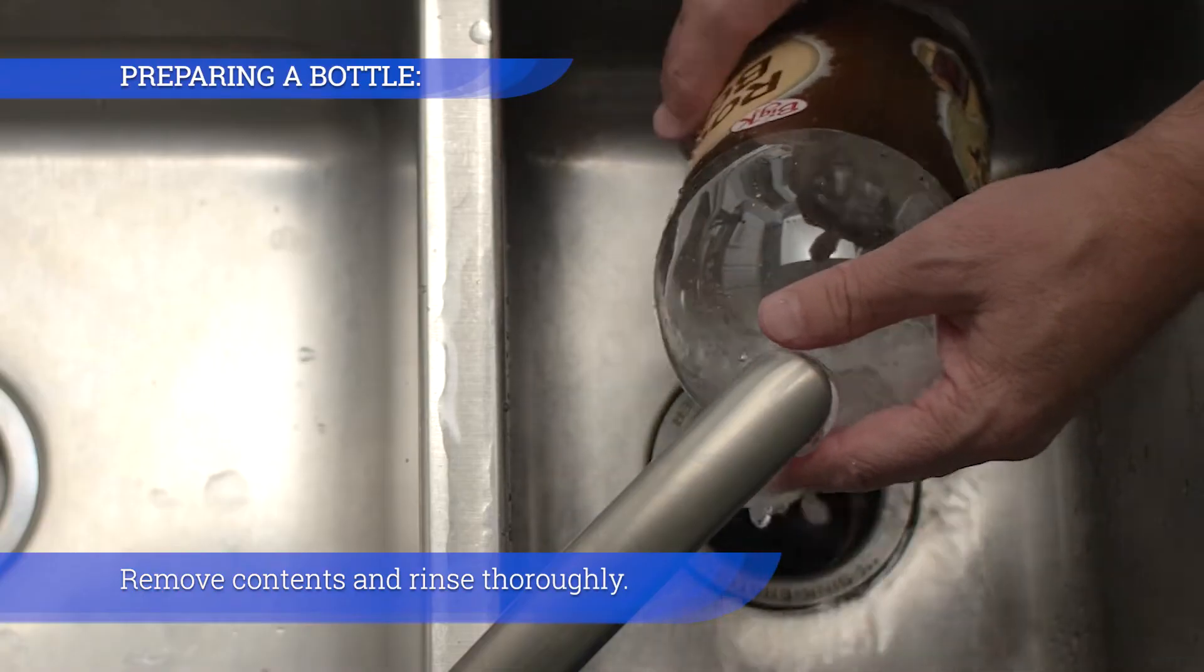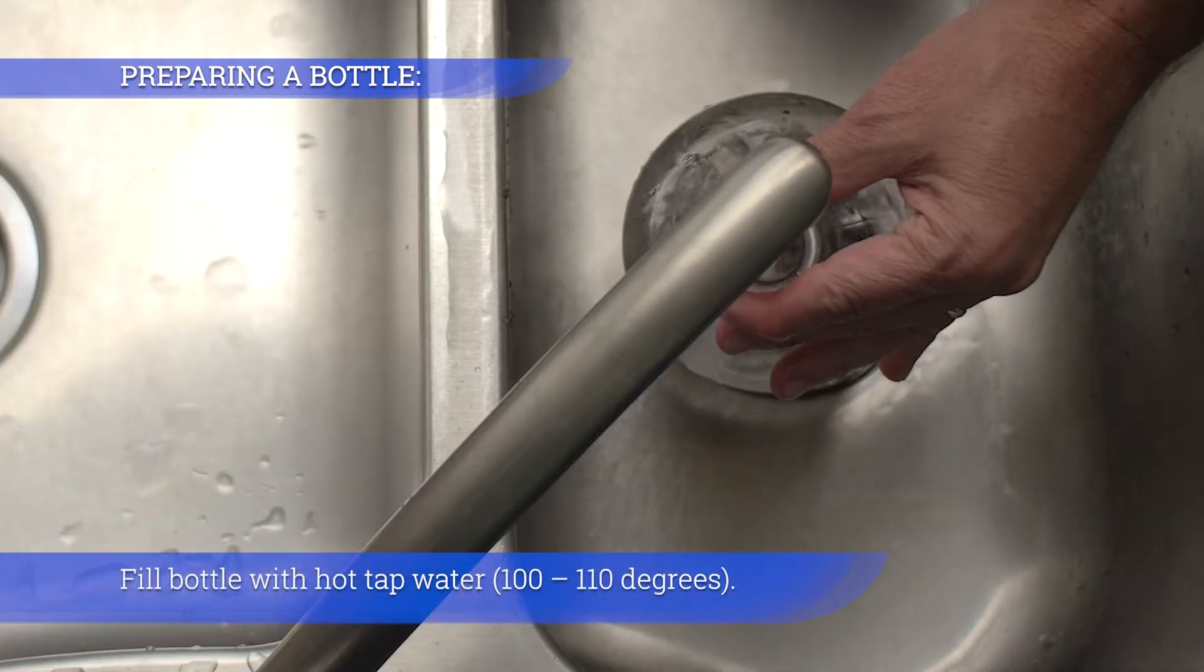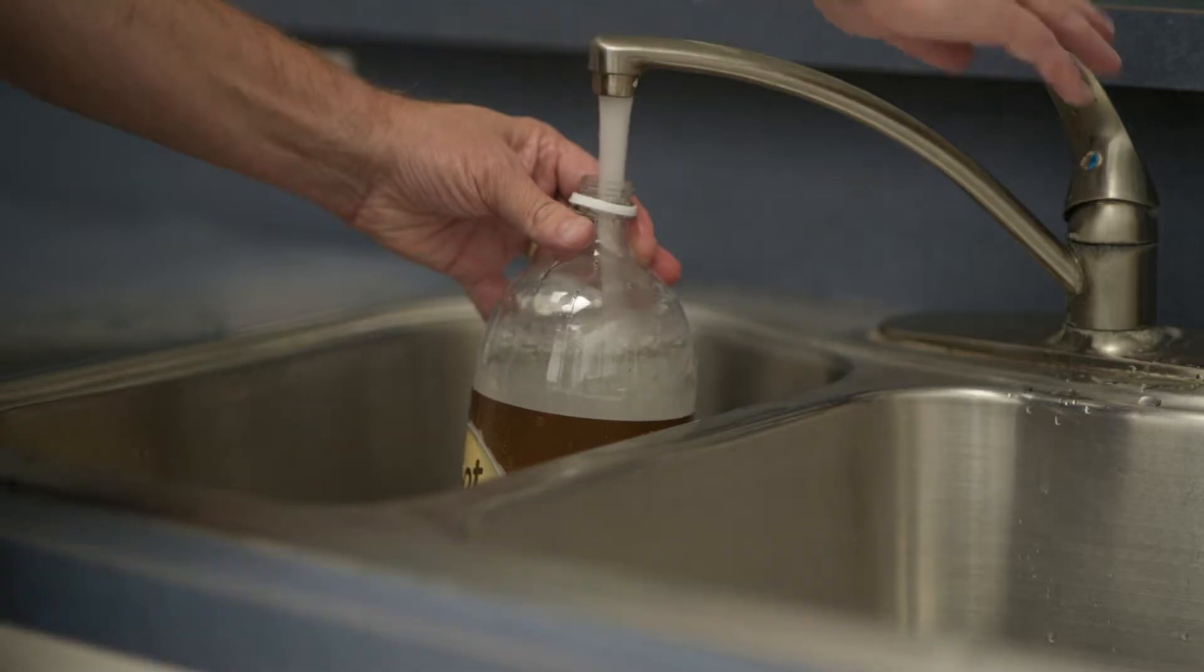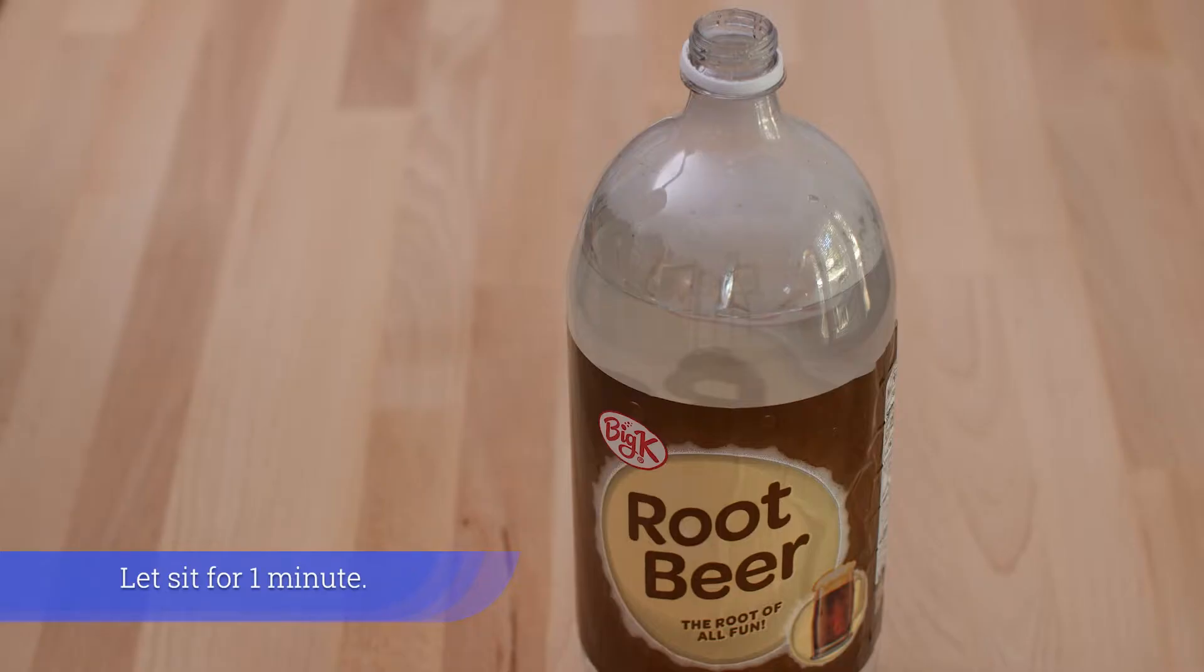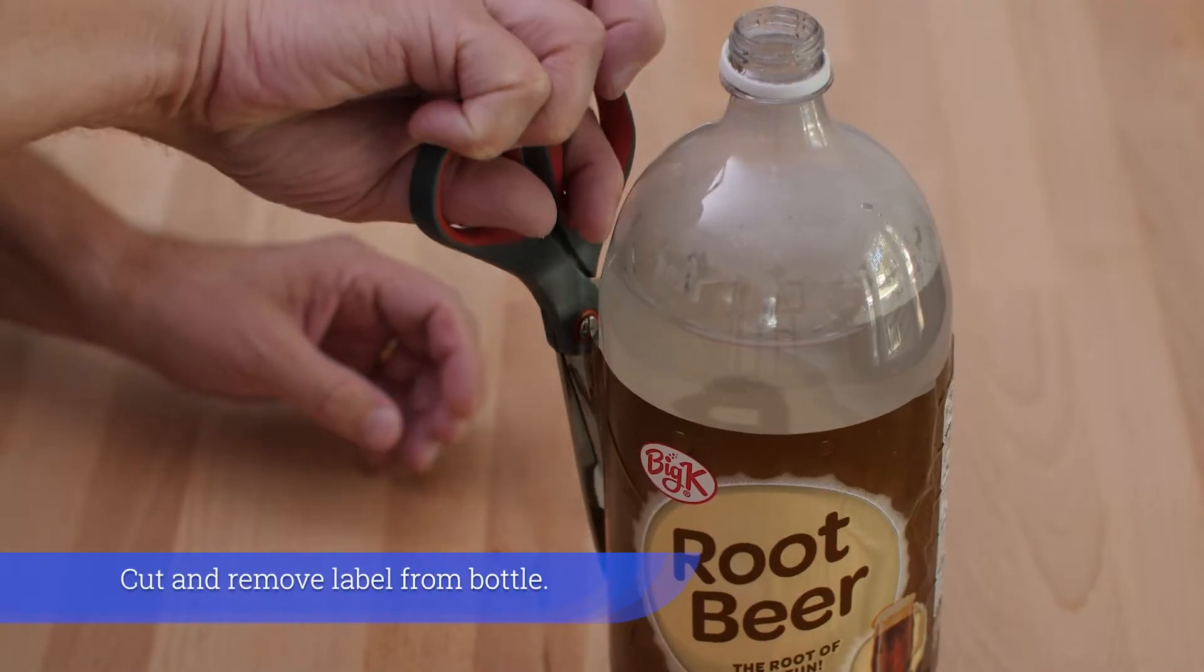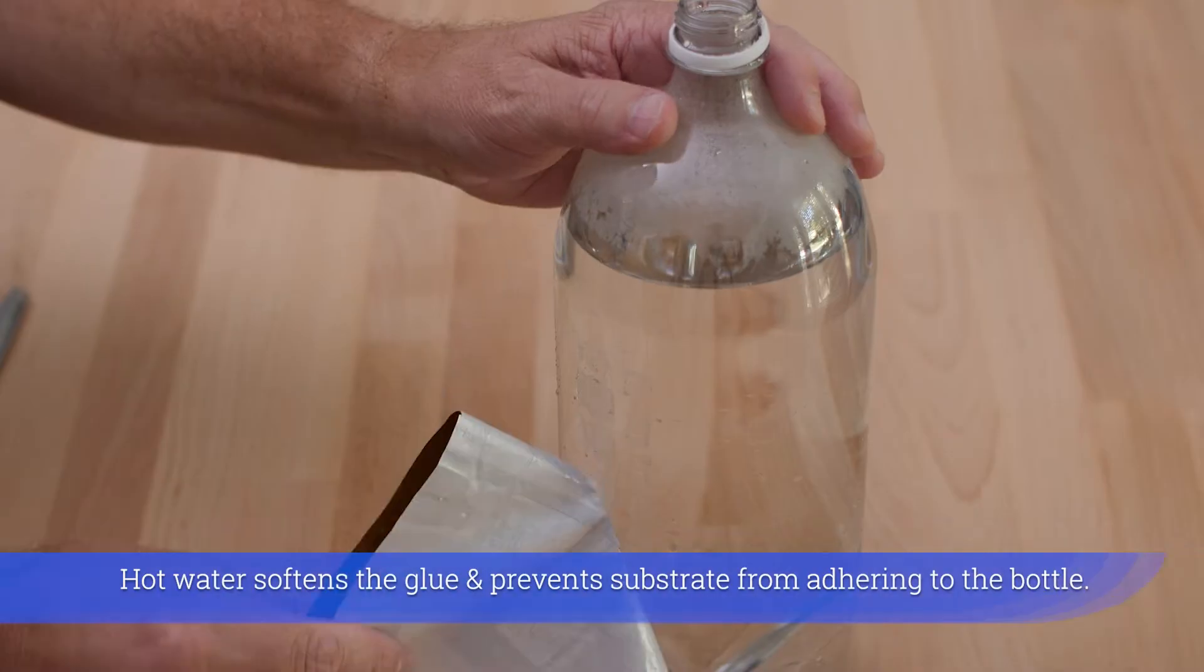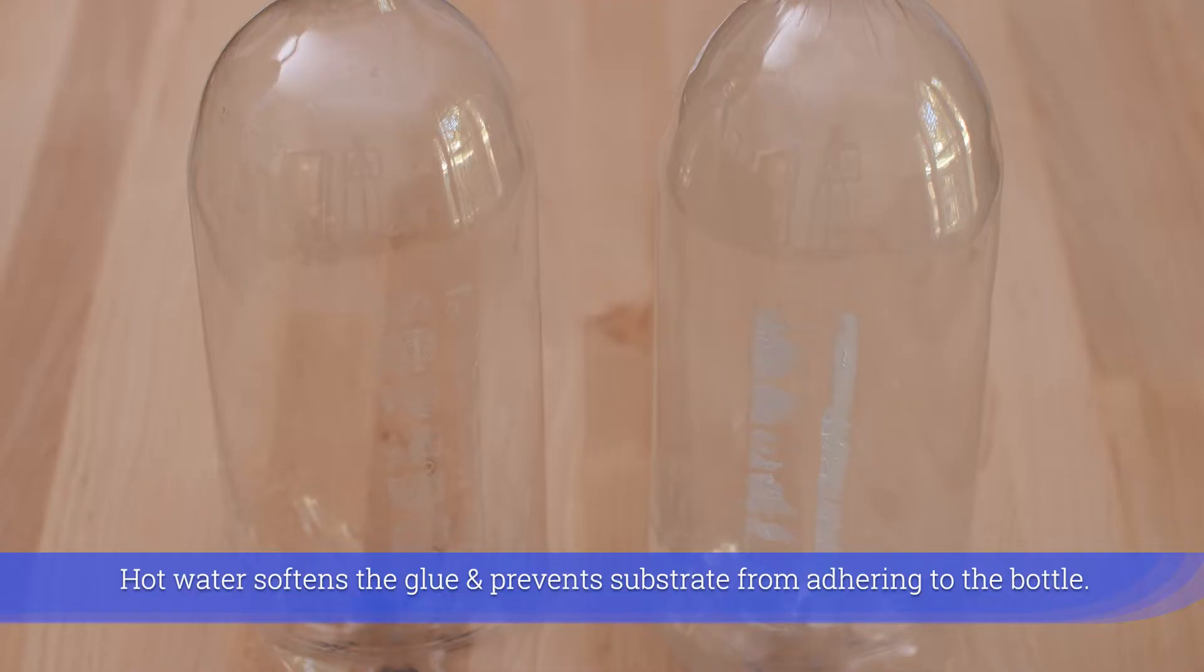Remove contents and rinse thoroughly. Fill bottle with hot tap water, 100 to 110 degrees. Let sit for one minute. Cut and remove label from bottle. Hot water softens the glue and prevents substrate from adhering to the bottle.